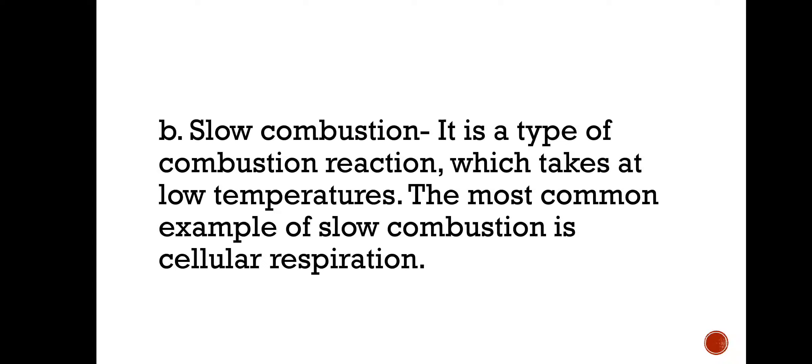When we inhale air, oxygen is taken up by the blood and goes to the cells, where cellular respiration takes place. This occurs at a very slow rate, and this type of combustion is known as slow combustion. So the example of slow combustion is cellular respiration.